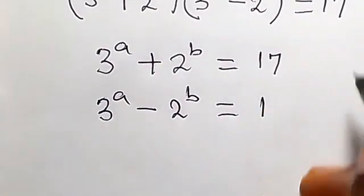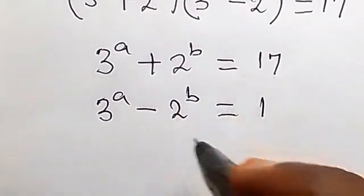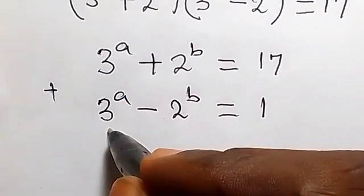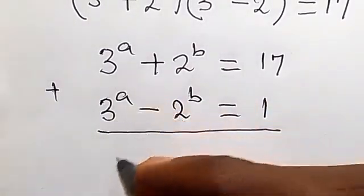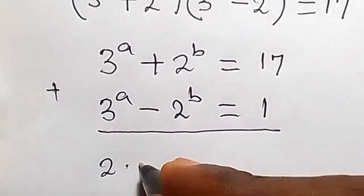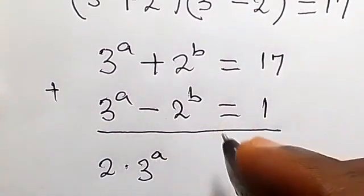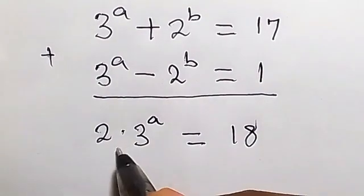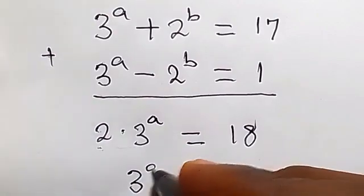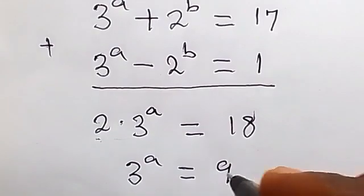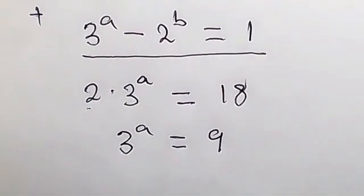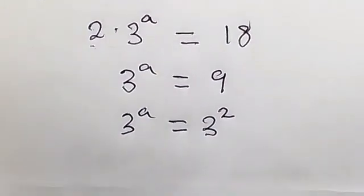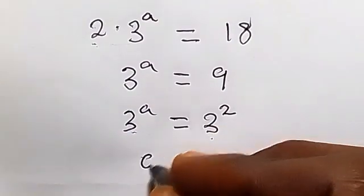Now let's solve this system of equations simultaneously. When we add the two equations together, we get 2 times 3 raised to power a equals to 17 plus 1, that's 18. Dividing both sides by 2, 3 raised to power a equals 9. We can express 9 as 3 squared, so 3 raised to power a equals 3 raised to power 2, and since the bases are equal we equate the powers: a equals 2.